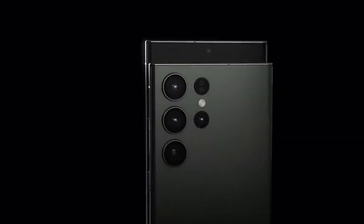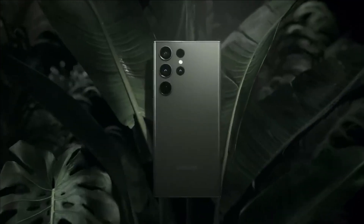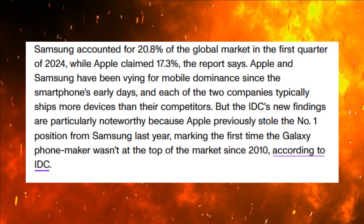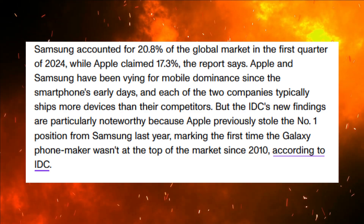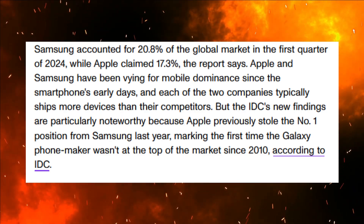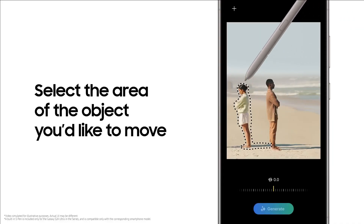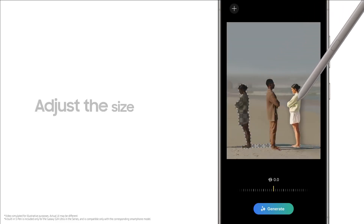Samsung is once again at the top of the global smartphone market. The South Korean electronics maker surpassed Apple to become the number one smartphone company in terms of worldwide shipments, according to the International Data Corporation, coming after Apple previously claimed the top spot.